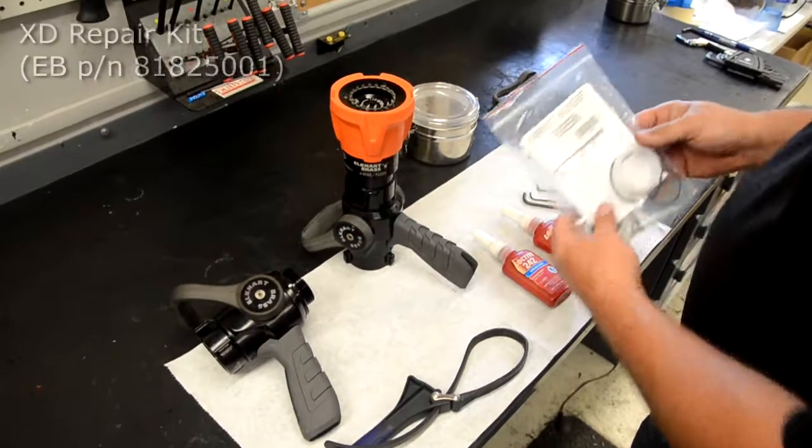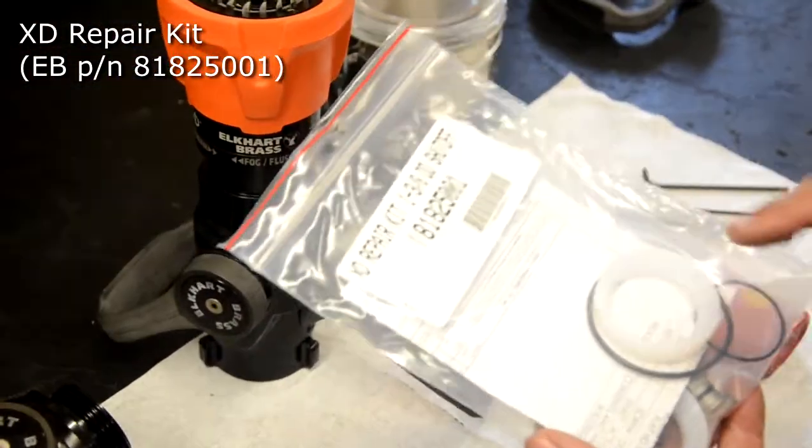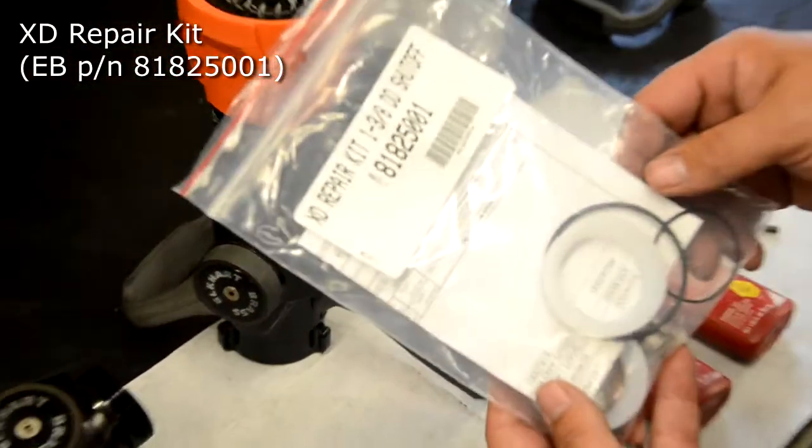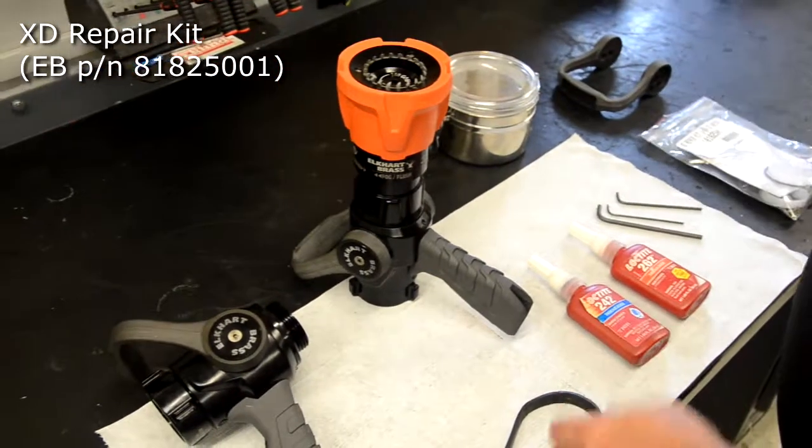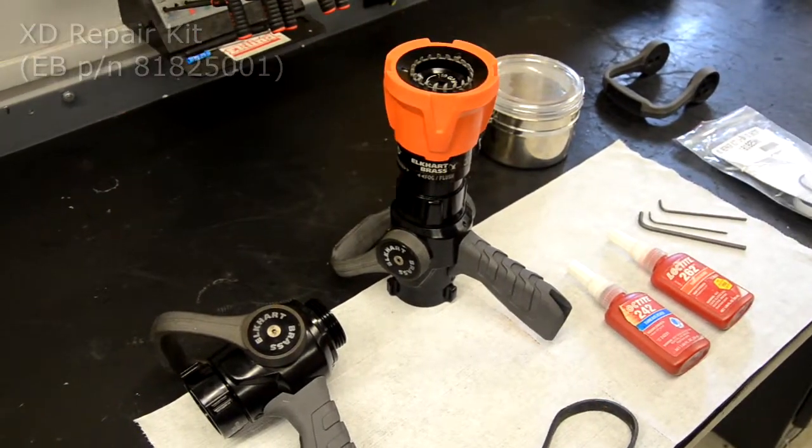The XD Repair Kit, part number 81825001, will have all the seats, o-rings, and replacement parts you'll need for this procedure. So let's begin.